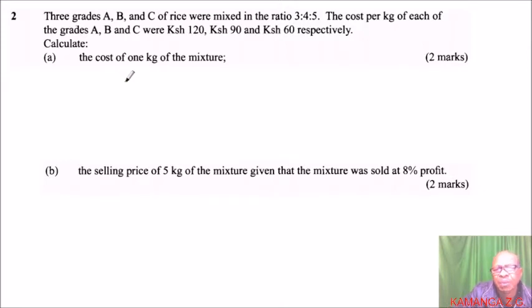Let's start with this. We have the ratio A:B:C equals 3:4:5. We also have been given the cost of A is 120, B is 90, and C is 60 shillings.